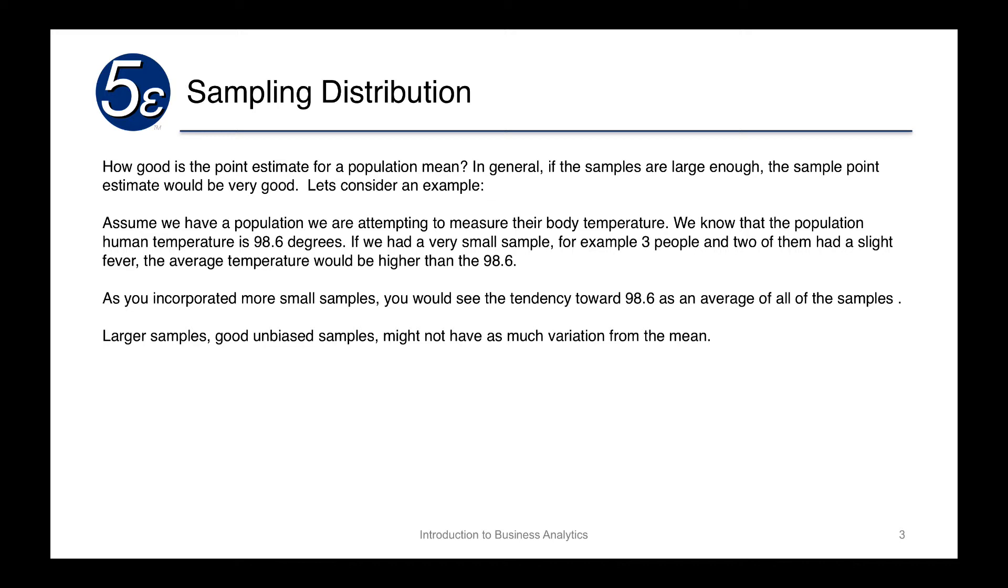If you increase the sample size from three to, say, 30, and 50, and 100, again, you would see the same thing. And it's because as we add more observations, either through increased number of samples, or through increased number of observations in a single sample, we will not have as much variation from the mean.